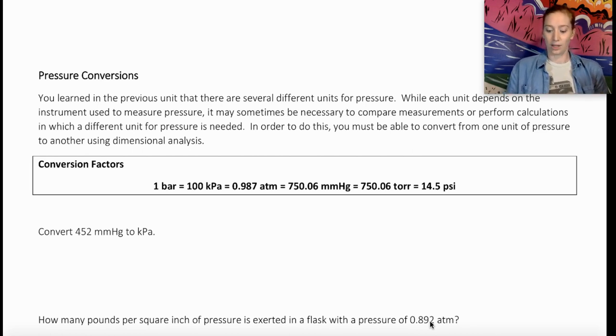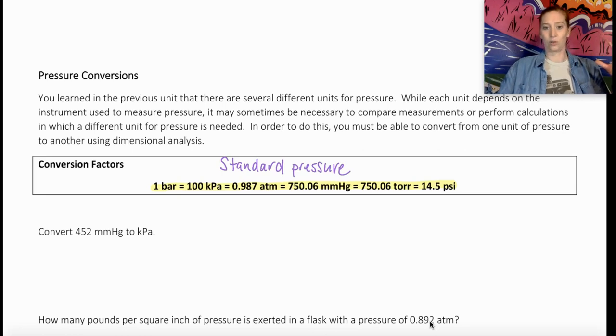So what you have here in the center of this screen is our conversion factors. These are all based on what we call standard pressure. And this is standard atmospheric pressure, so that's the pressure that the air particles are putting on an object. The standard unit of pressure is one bar.